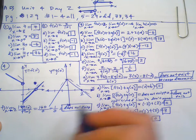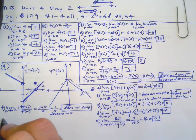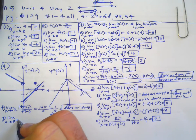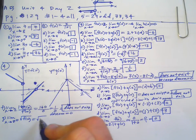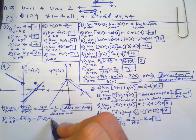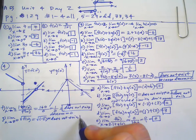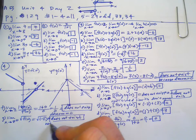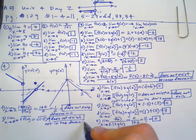Because the denominator equals zero. Part G: limit as X approaches two from the right of the square root of F of X would be the square root of negative two, which does not exist because it's not in the domain — you can't take even roots of negatives. Part H: limit as X approaches zero from the left of the square root of F of X — that's going to be the square root of positive one, which is 1.